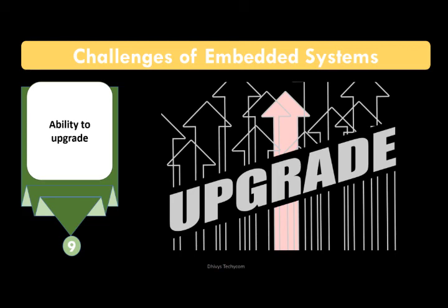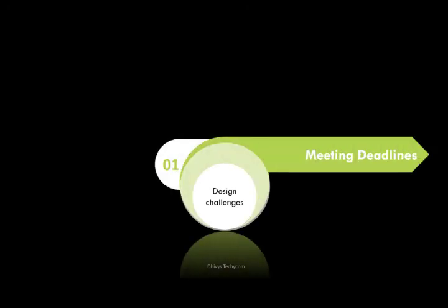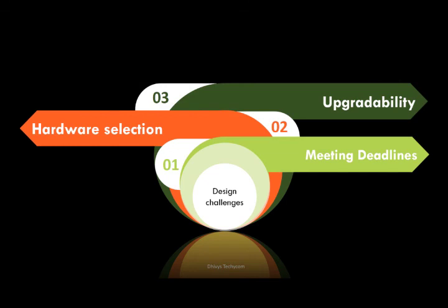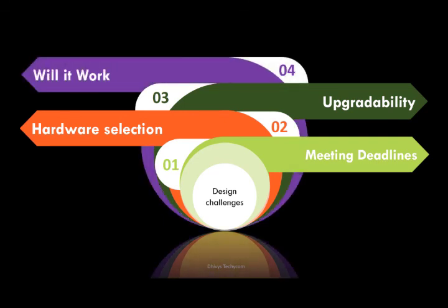In the second session, the four most important challenges are: first, meeting up with the deadline, which is the most critical; second, hardware selection, as choosing the right processor is very important; third, upgradability, since users depend heavily on it as new techniques are launched every day; and fourth, checking whether the design will actually work, which is also a significant challenge.